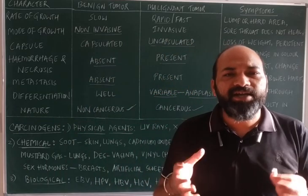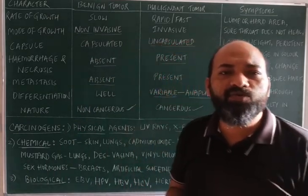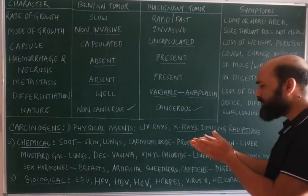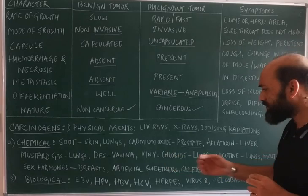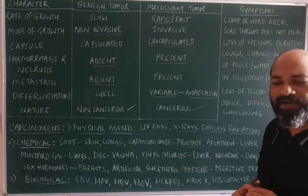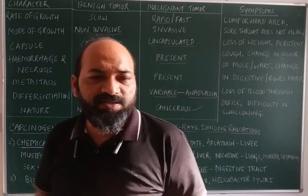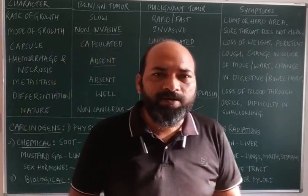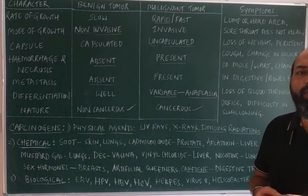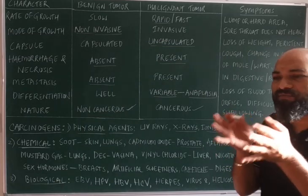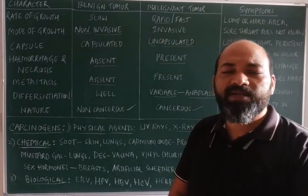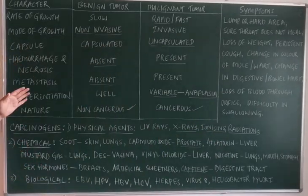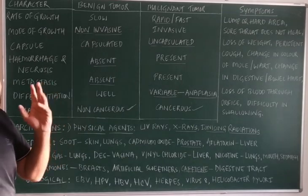The third type is biological agents. For the first time, Peyton Rous identified that cancer can be induced by biological agents such as viruses. Examples include Epstein-Barr virus, Human Papillomavirus, Hepatitis B virus, Hepatitis C virus, Herpes Simplex Virus 8, and Helicobacter pylori. All of these are biological agents known to cause cancer. For this discovery, Peyton Rous was awarded a Nobel Prize.